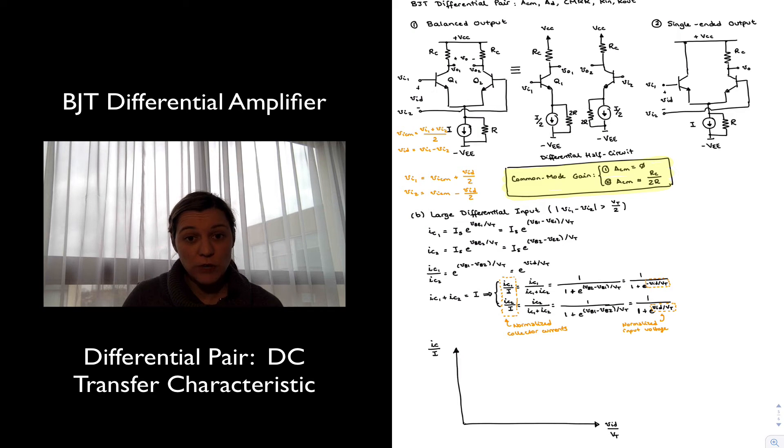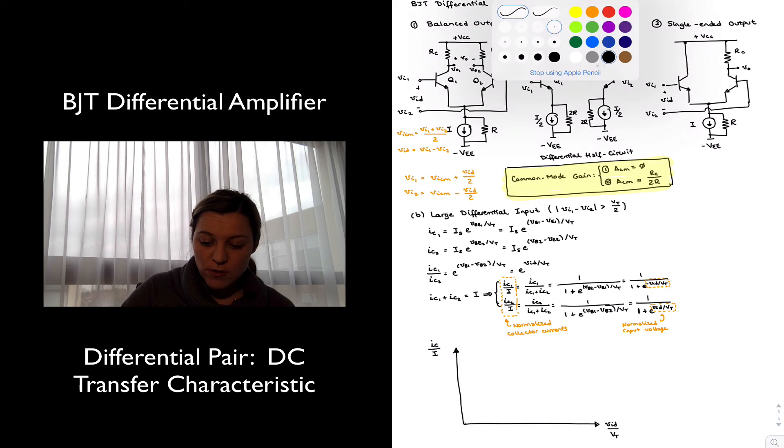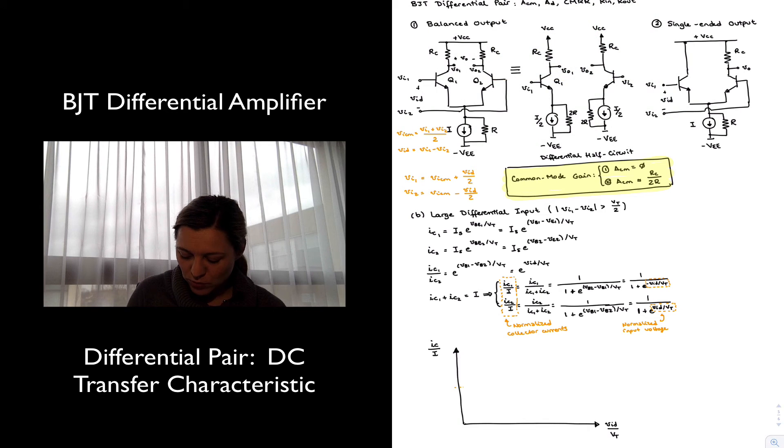So on my y-axis I have normalized collector current, on my x-axis I have normalized input voltage. And I'm going to come up with two different curves, one for IC1 and one for IC2. We can see that at exactly the point where VID is equal to zero, and so is the normalized input voltage VID over VT, at that exact point, then my equation is going to be 1 over 1 plus, and E to the 0 is equal to 1. So 1 over 1 plus 1 is 1 half for the normalized collector current of transistor 1, and 1 half for the normalized collector current of transistor 2. So I'm going to mark that as an important point. This will be when VID is equal to zero, and so is VID over VT, then I have that my normalized collector current will be half.